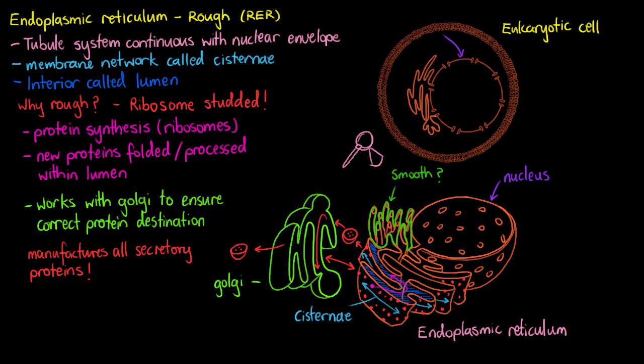So our rough endoplasmic reticulum is going to be responsible for the folding and processing of proteins that are created by our ribosomes. It's an intracellular organelle that's associated closely with our nuclear envelope, and it's part of the cell's endomembrane system, so it has its own plasma membrane. I hope this video has been helpful to you — thanks for watching, and I'll see you again soon.